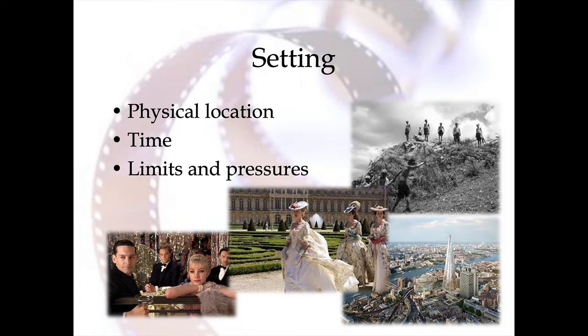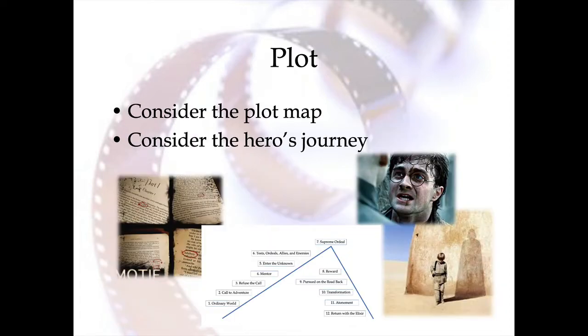We're also going to need plot, just like in literature — the basic plot map: exposition, rising action, climax, etc. You could also consider the more complex hero's journey, which could be between 10 and 12 steps depending on the model. But something needs to happen in literature, and something needs to happen in film. So we can see that overlap for how those two work together.